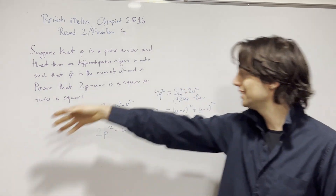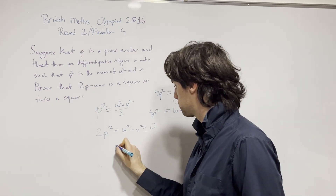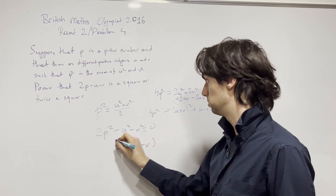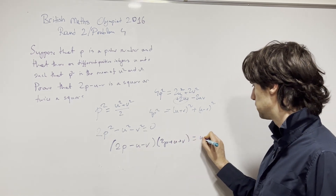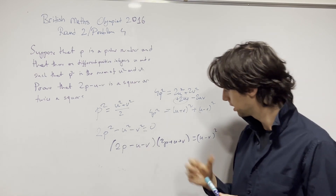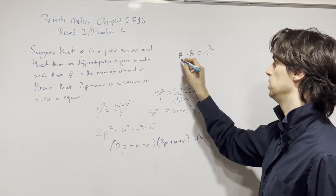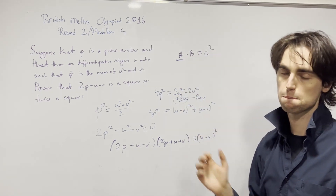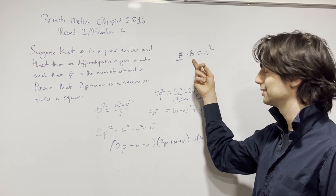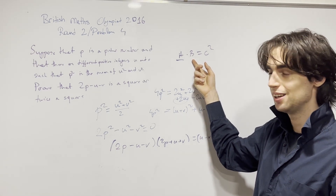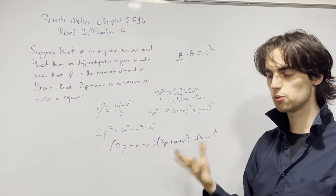Now that we've created these squares, let's write it as a difference of squares: (2p − u − v)(2p + u + v) = (u − v)². So now we have something of the form a times b equals c squared, and we need to prove that a is a square or twice a square. If a is a square then b is also a square; if a is two times a square, b is two times a square.